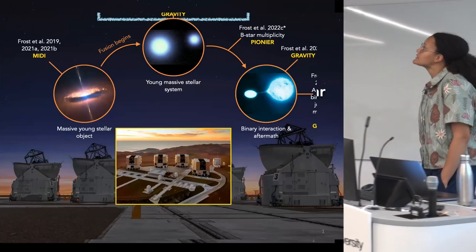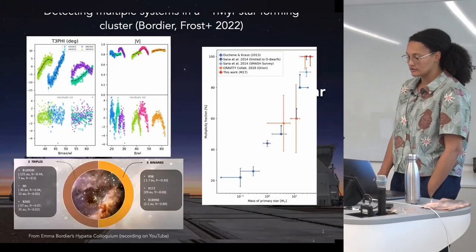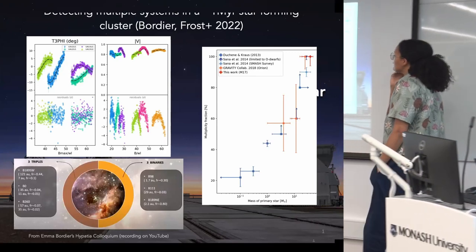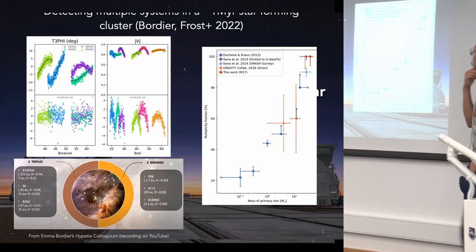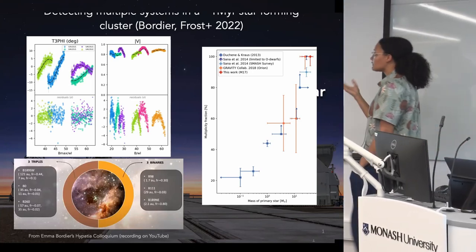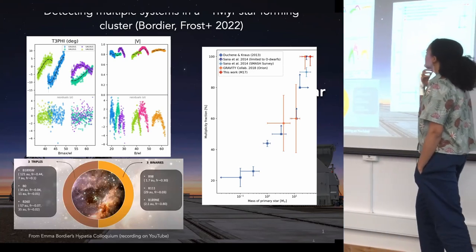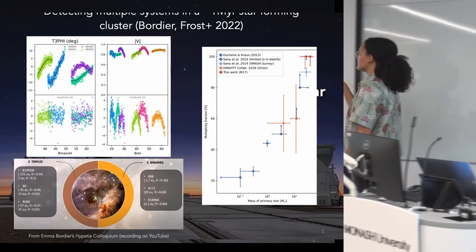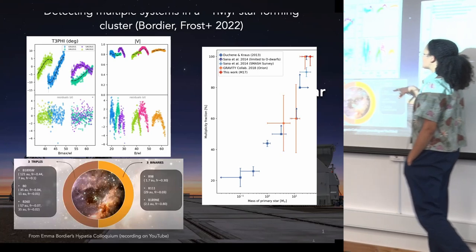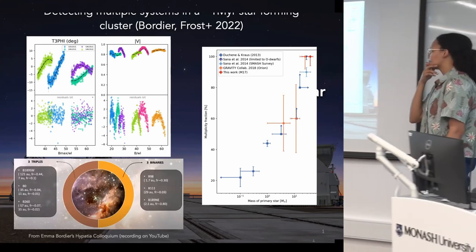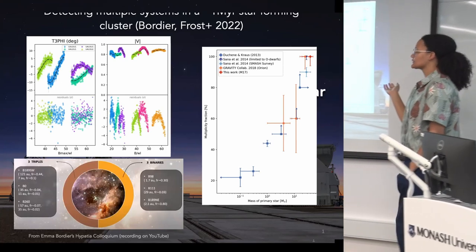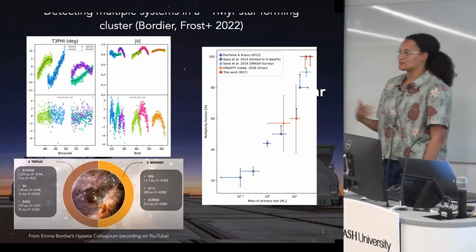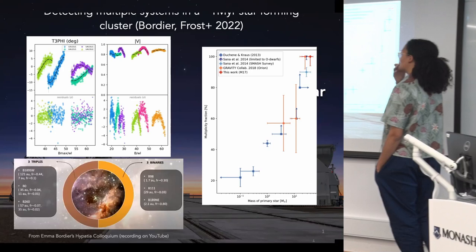Now I want to move on to the massive multiple systems I've been looking at on the main sequence and beyond. I want to highlight some work that my PhD student Emma Bordier has been doing recently. She's been looking at the very young star-forming region M17, which is only one mega-year old. Multiplicity has to be being set at the star formation process, because in this one mega-year old cluster, all of the O stars she's looked at in this star-forming region are multiples — half of them are binaries, half of them are triples. Something has to be happening very quickly, very early on, in order to provide the multiplicity statistics that we're seeing on the O stars who are a few mega-years old.